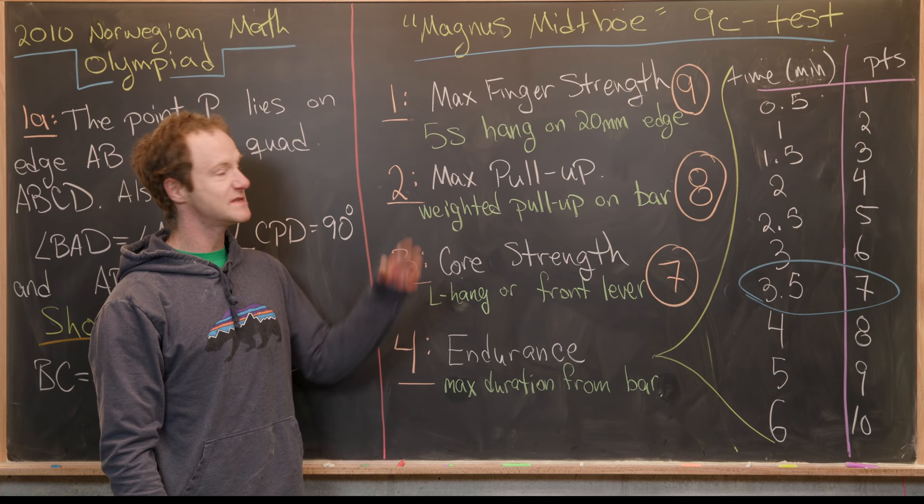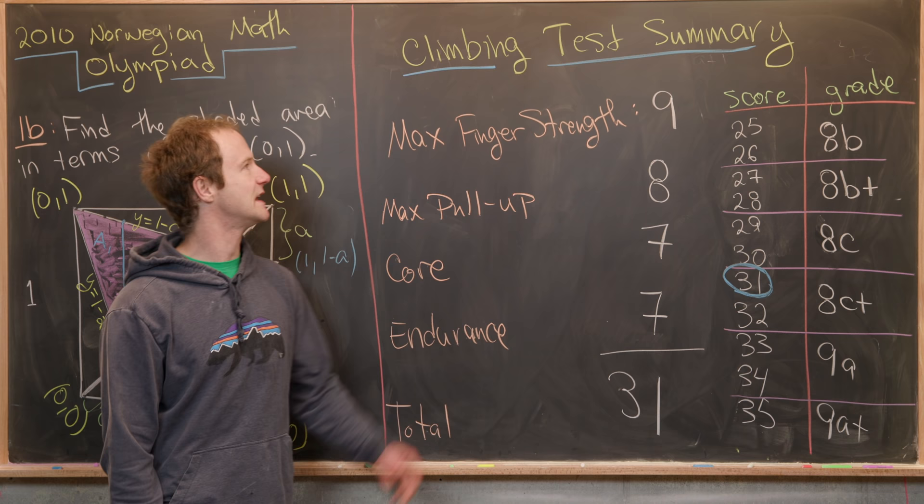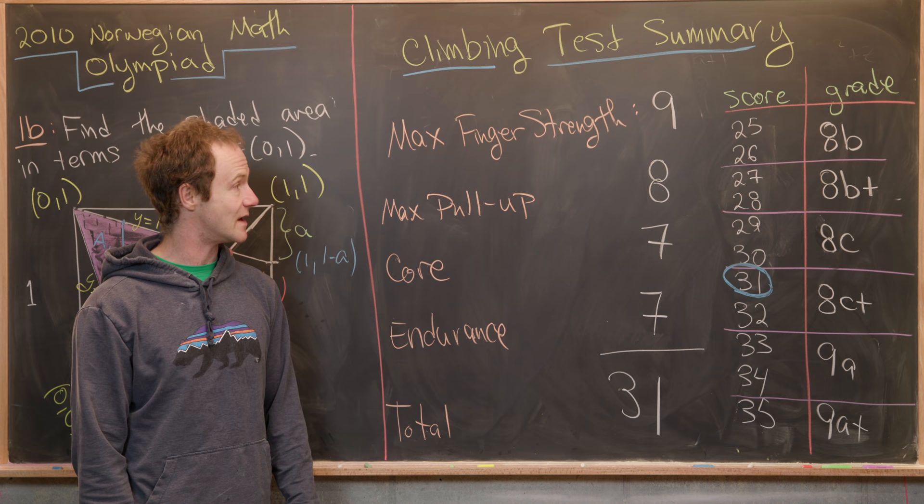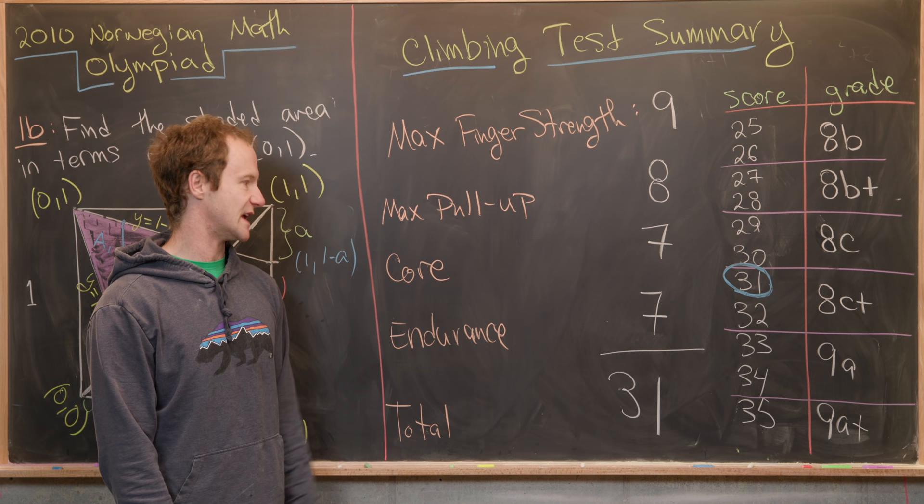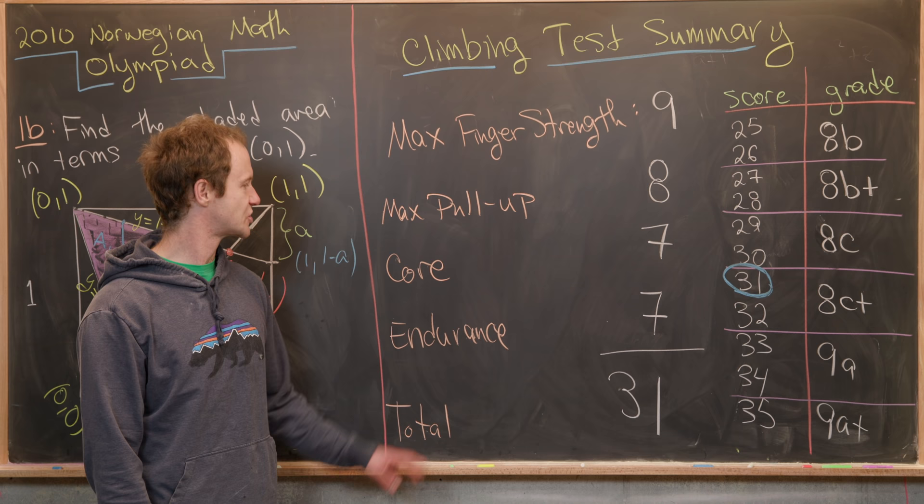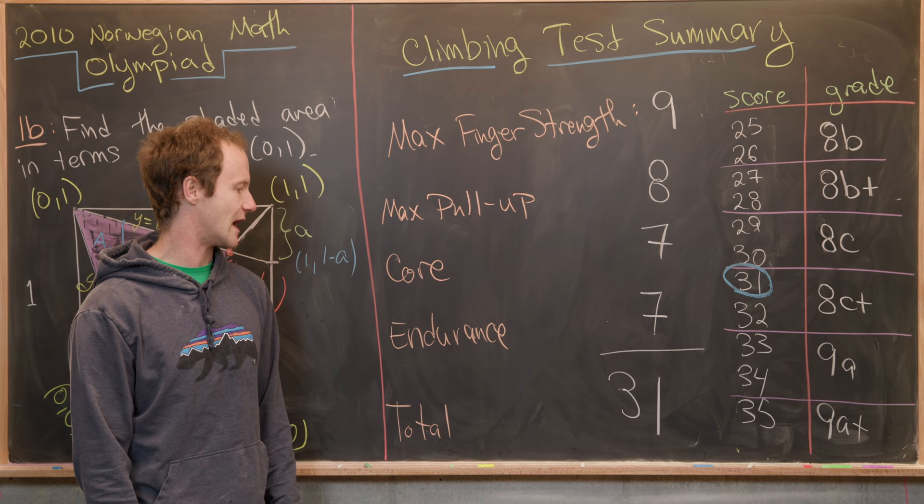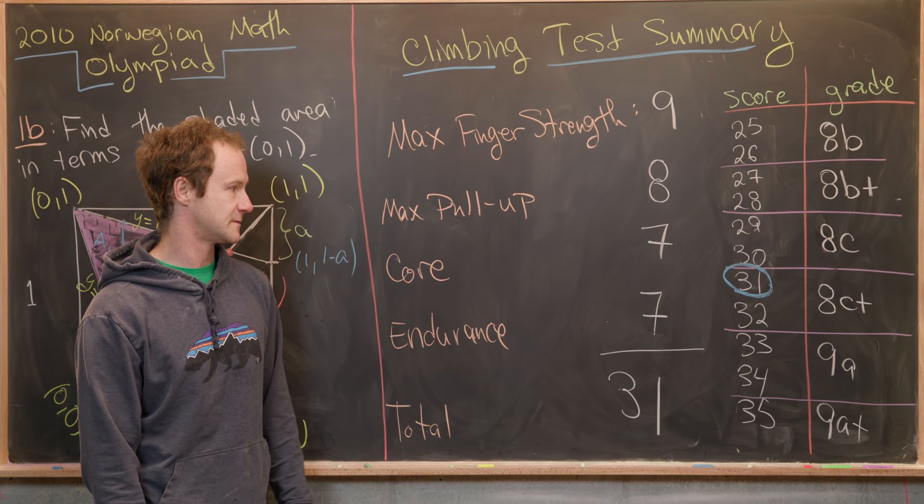Let's maybe get rid of this and we'll look at the summary and how I did. So let's see how I did on this climbing test. So for the maximum finger strength, I got nine out of 10 points. For the maximum pull up, I got eight points. For core, I got seven points. And for endurance, I also got seven points. I'm a bit surprised at how strong my maximum finger strength was. Although the rest of them don't really surprise me that much. Maybe I'm a little bit surprised that I only got seven points on core because I've always thought that as one of my strengths. So that gives me a total of 31 points, which says that my maximum grade should be 8C plus or 14C.